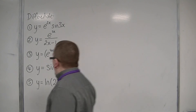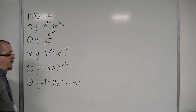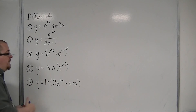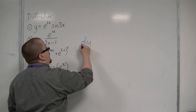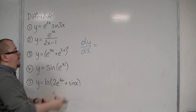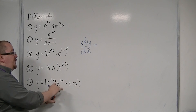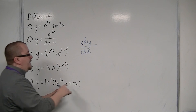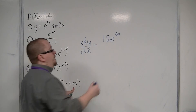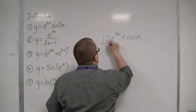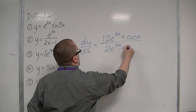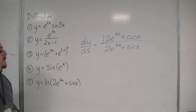For number 5, y is equal to log of 2e^(6x) plus sin(x). Using the chain rule, we write the derivative of what's inside as the numerator. The derivative of 2e^(6x) is 12e^(6x), and the derivative of sine is cosine. That's all over the original function inside: 2e^(6x) plus sin(x). And that's how we differentiate number 5.